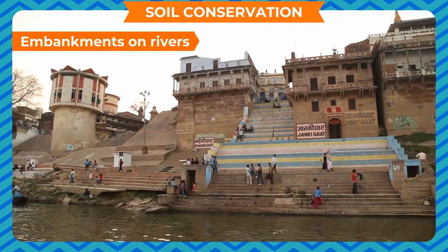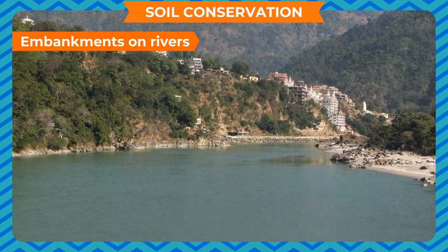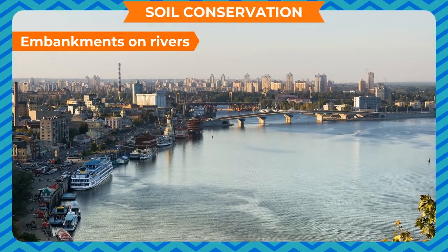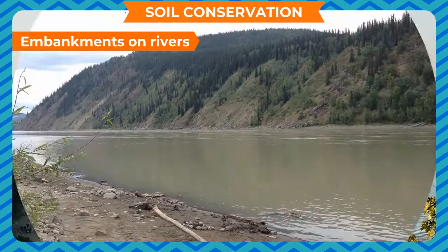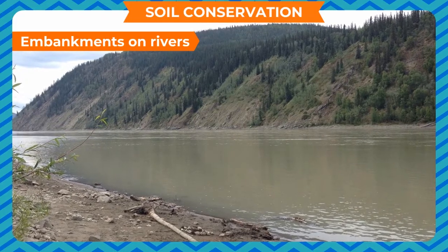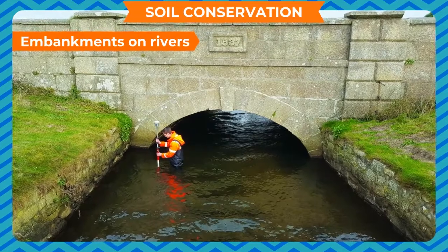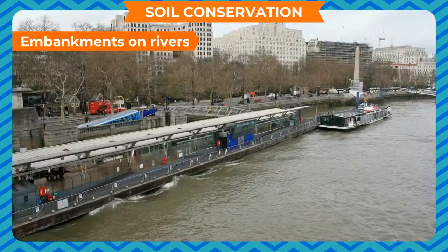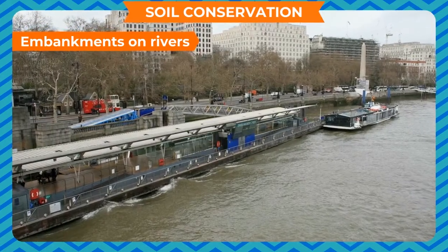Embankments are artificial slopes made of stone and sand. Building embankments of rocks or soil on the banks of rivers helps control soil erosion. The embankments help to retain river water within its banks during rain or floods, and retain the soil on the banks. These embankments are called bunds.